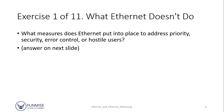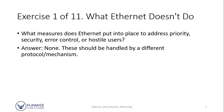We have about 11 exercises in this course. Exercise 1 of 11: what is Ethernet and what does Ethernet not do? The question is what measures does Ethernet put into place to address priority, security, error control, or hostile users? The answer is nothing — those will actually have to be handled by another protocol or mechanism.